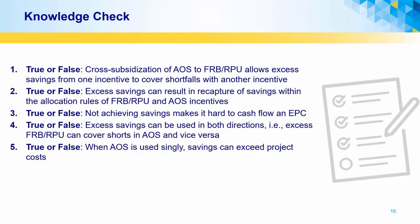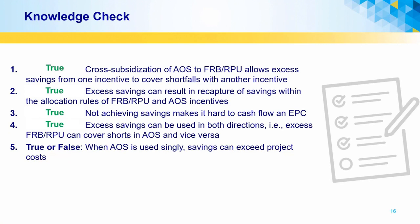Knowledge Check. Cross-subsidization of add-on subsidy to frozen rolling base resident paid utility allows excess savings from one incentive to cover shortfalls with another incentive — True. Excess savings can result in recapture of savings within the allocation rules of frozen rolling base resident paid utilities and add-on subsidy incentives — True. Not achieving savings makes it hard to cash flow an EPC — True. Excess savings can be used in both directions, that is, excess frozen rolling base resident paid utility can cover shorts in add-on subsidy and vice versa — True. When add-on subsidy is used singly, savings can exceed project costs — False.